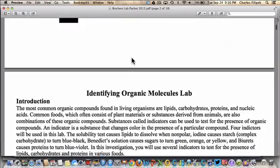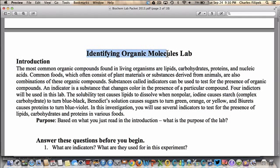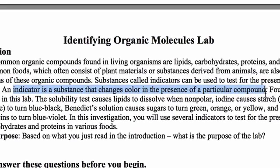As we scroll down here, the lab we're going to start on Thursday is this identifying organic molecules lab, and what we're going to be doing is taking a look at indicators — any substance that's going to change color in the presence of a particular compound, whether it be a sugar, a protein, a fat, maybe a simple sugar versus a complex sugar versus a disaccharide. There are four indicators that we're going to use.